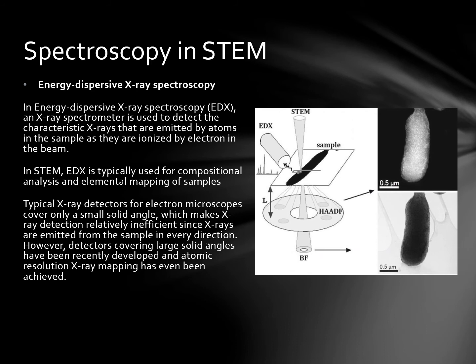Energy dispersive X-ray spectroscopy, EDX, uses an X-ray spectrometer to detect the characteristic X-rays emitted by atoms in the sample as they are ionized by electrons in the beam. In STEM, EDX is typically used for compositional analysis and elemental mapping of samples. Typical X-ray detectors for electron microscopes cover only a small solid angle, making X-ray detection relatively inefficient since X-rays are emitted from the sample in every direction. However, detectors covering large solid angles have been recently developed, and atomic resolution X-ray mapping has been achieved.